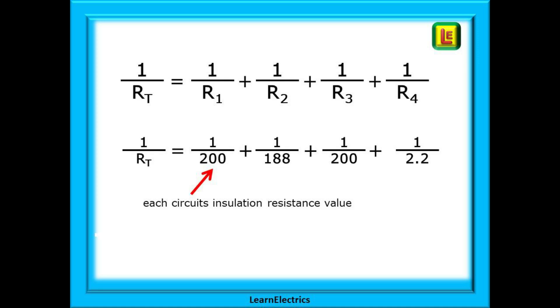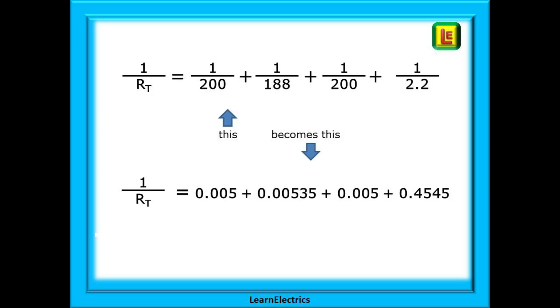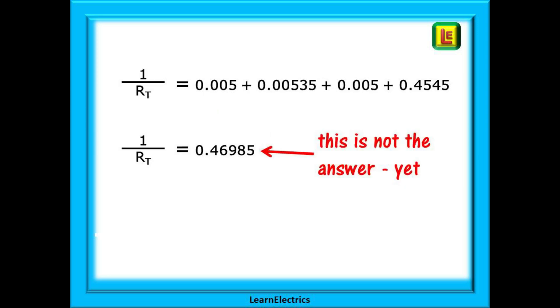Replace R1 by circuit one's resistance which is 200. Then replace R2 by circuit two's which is 188 and so on. Calculate each value and you will end up with several decimal numbers as shown. Add these numbers together and in our case we have 0.46985 or very similar depending on how you round up or round down. This is not the answer yet.